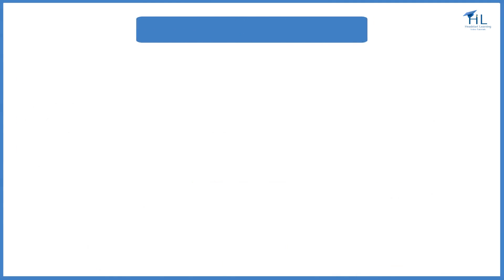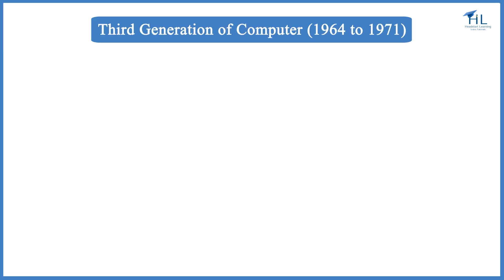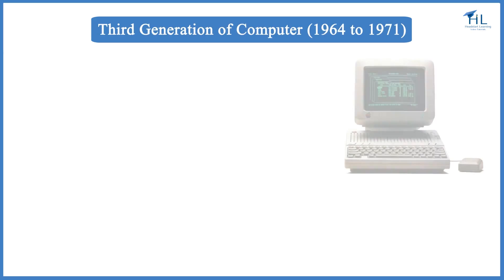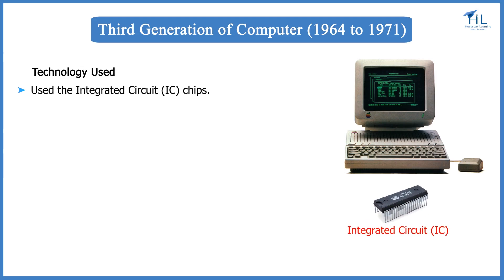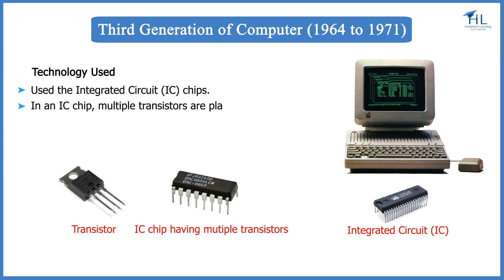Then came the third generation of computers, from 1964 to 1971. The third generation computers used integrated circuit, or IC, chips. In an IC chip, multiple transistors are placed on a silicon chip. Silicon is a type of semiconductor. The use of IC chips increased the speed and efficiency of the computer manifold.